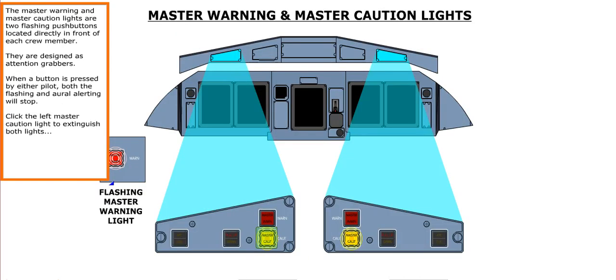The Master Warning and Master Caution lights are two flashing push buttons located directly in front of each crew member. They're designed as attention grabbers. When a button is pressed by either pilot, both the flashing and aural alerting will stop. Click the left Master Caution light to extinguish both lights.